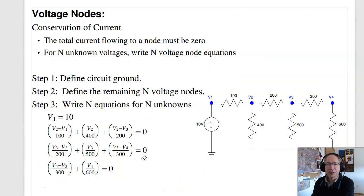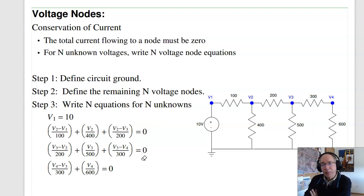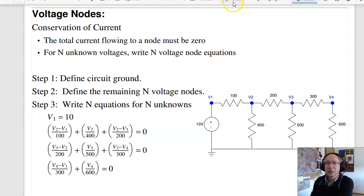That's current loops. Voltage nodes is based on conservation of current. Current is the flow of electrons — electrons have mass, not a lot, but some. If I'm not creating matter, the total number of electrons created has to be zero. Conservation of current says current in equals current out, or equivalently, the total current from a node has to add to zero.